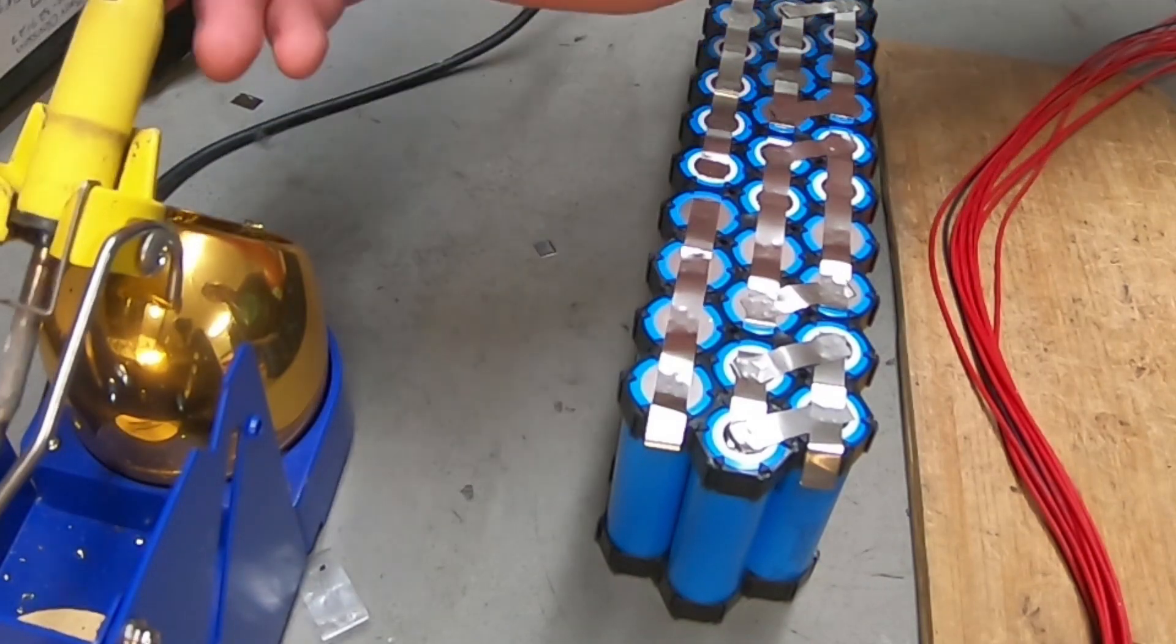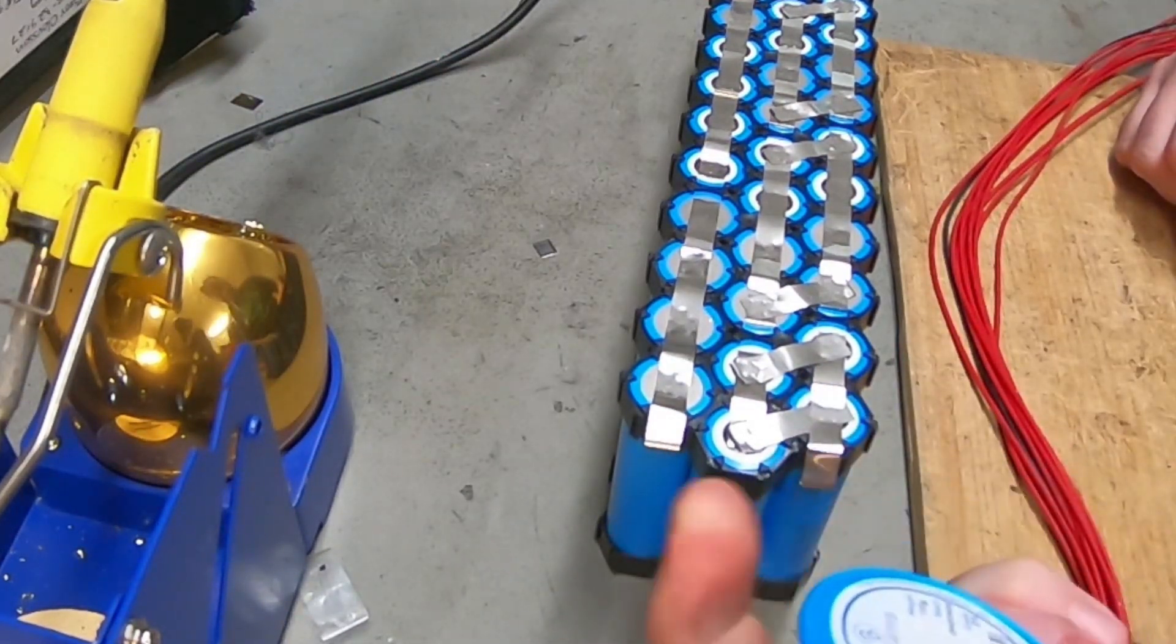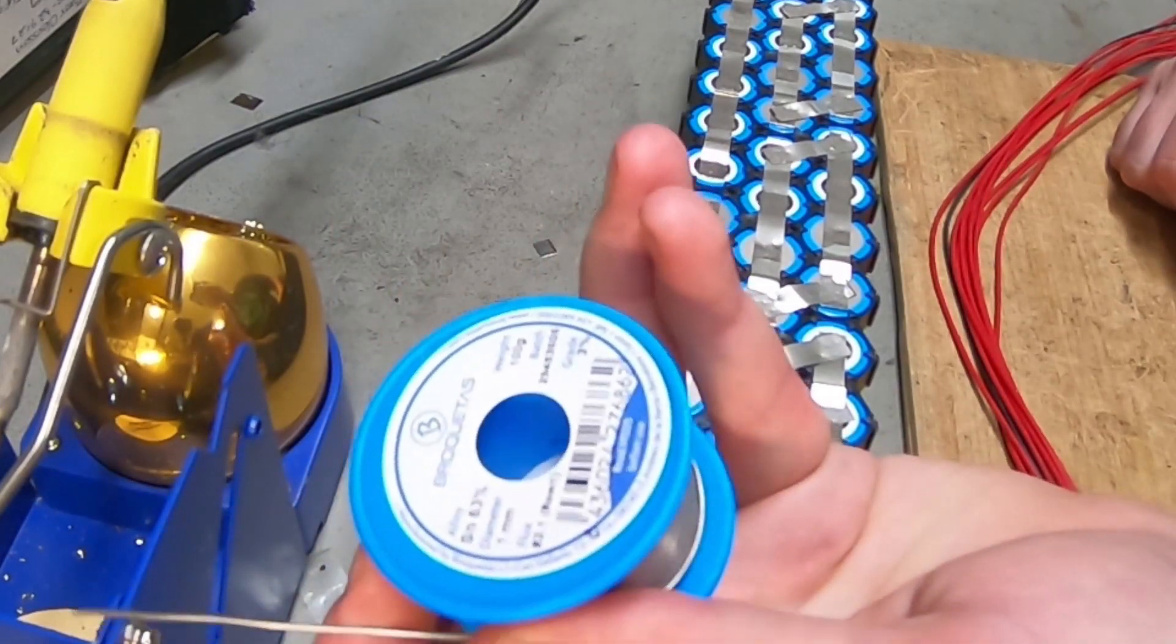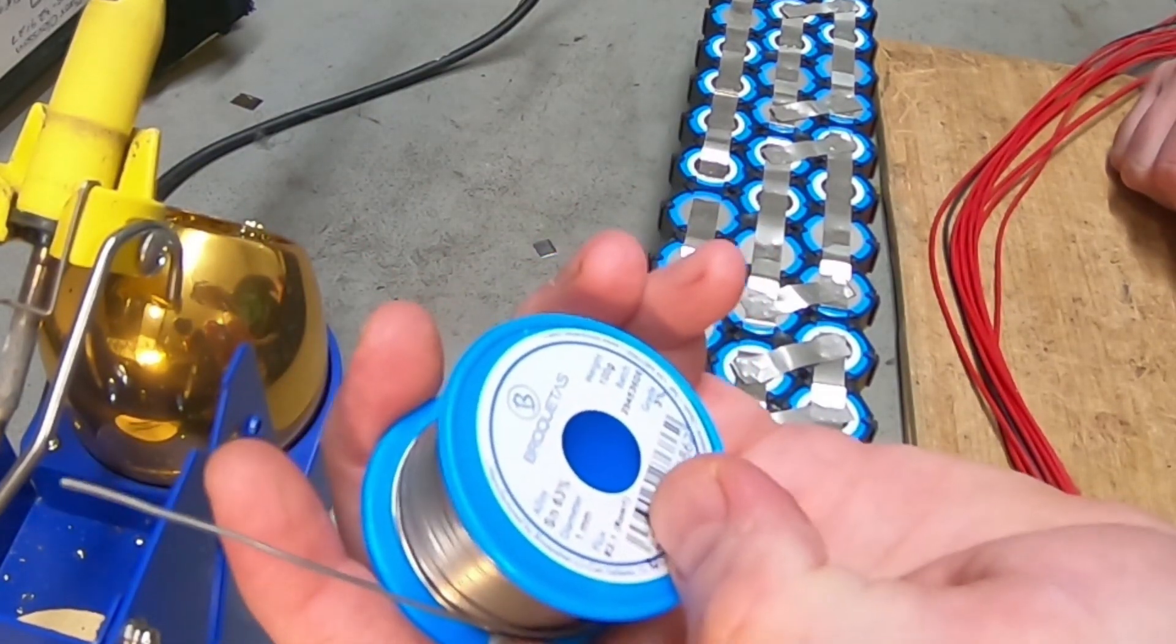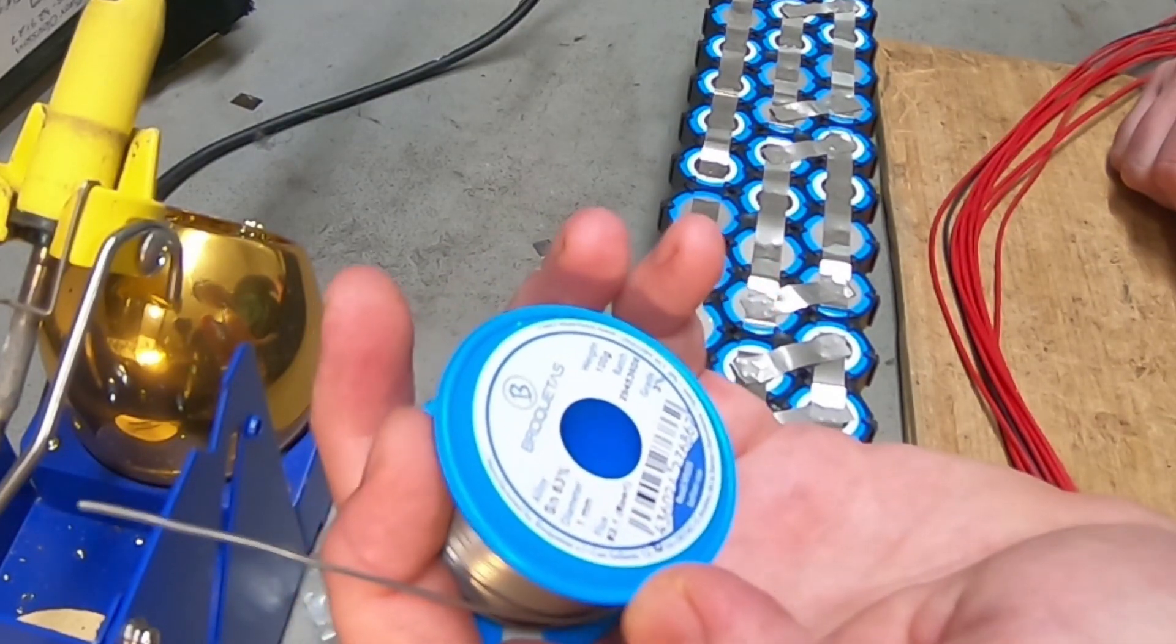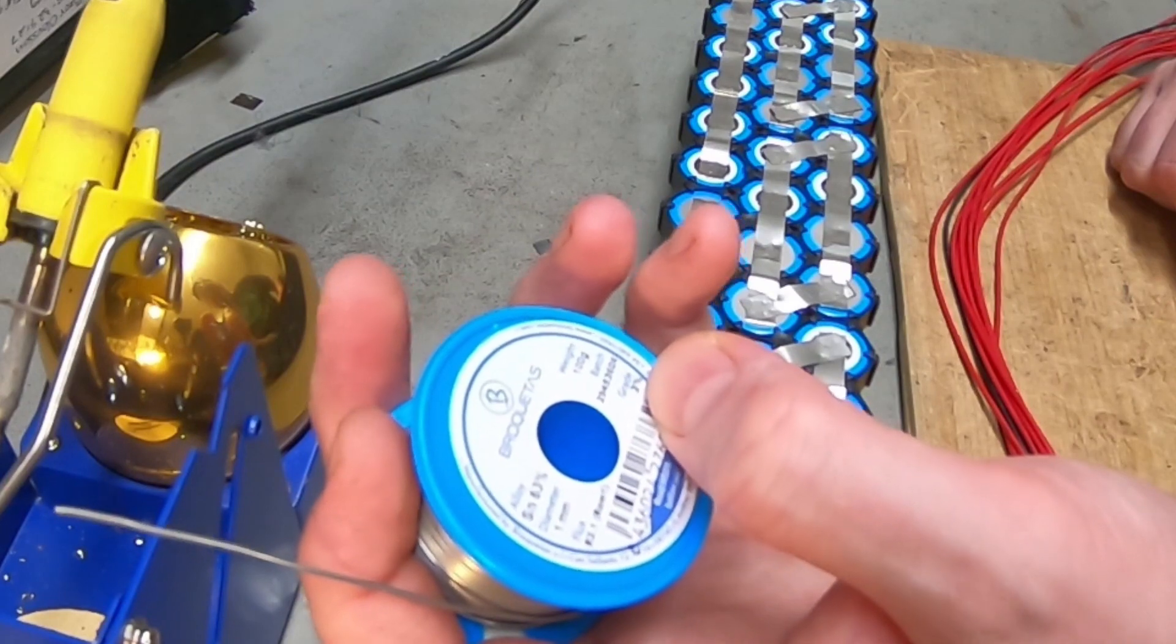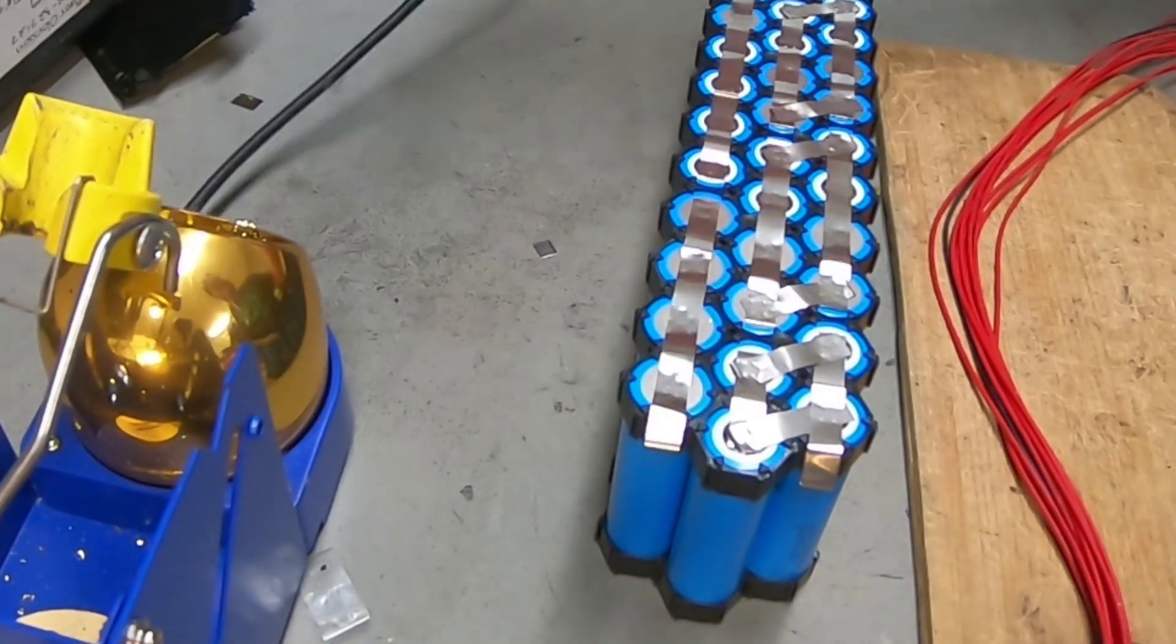But if you have a good soldering iron like Hakko and good fast-melting solder—I'm testing a lot of new ones, but this is 63% zinc and the rest is lead, I think 3% flux, one millimeter—then you can solder really fast.